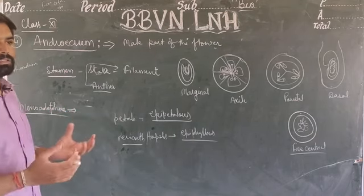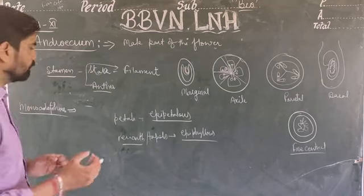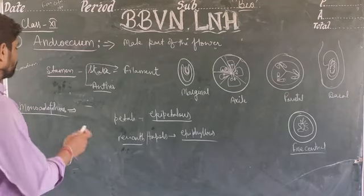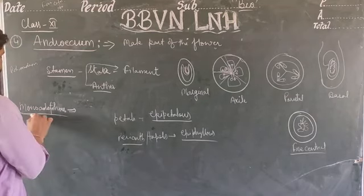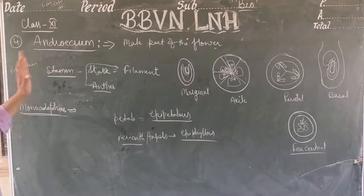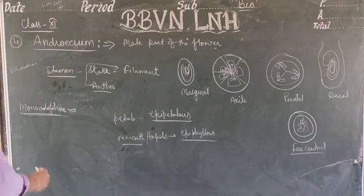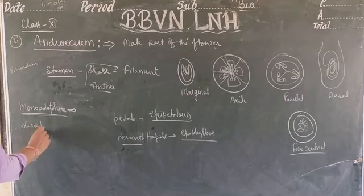If the stamens are fused in the same bundle — one bundle — it is known as monadelphous stamen. After monadelphous, the next type is diadelphous.